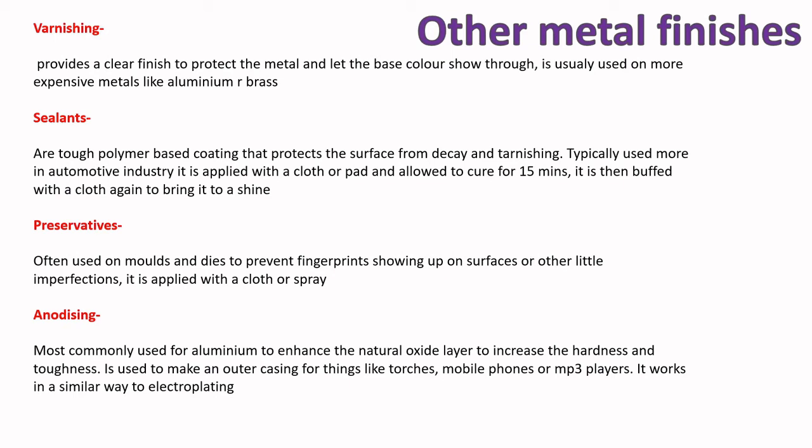A few more metal finishes: varnishing provides a clear finish and some weather protection, used with aluminium or brass. Sealants protect against surface decay and tarnishing, commonly used in the automotive industry — applied with a cloth or pad, left to cure for 50 minutes, then buffed to a shine. Preservatives are used on molds and dies to prevent fingerprints and imperfections. Anodizing, typically used for aluminium, enhances the natural oxide layer to make it harder and tougher, working similarly to electroplating — used for torches and mobile phones.